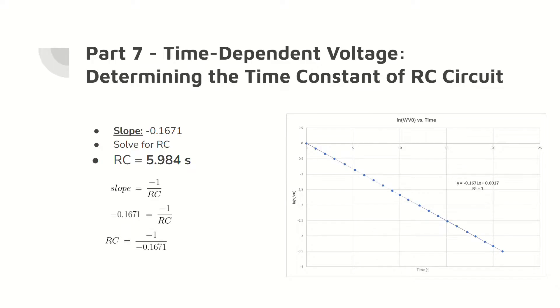The plot gave a linear slope which was then used to calculate the time constant, RC, of the RC circuit. This time constant equals 5.94 seconds.